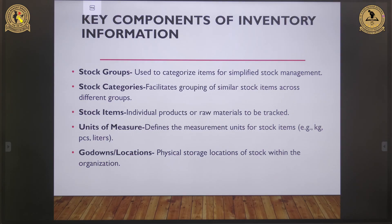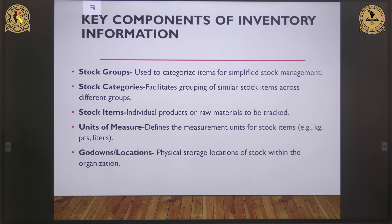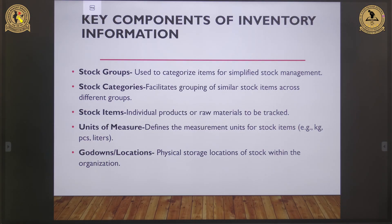Then we have the stock category, which facilitates the grouping of various stock. Then we have the stock item, which refers to the actual product or raw material that needs to be tracked individually. The unit of measure is also very important — we have to define the units in which stock is measured, such as pieces, liters, kilograms, and so on. Then we have godown and location, which help in tracking whether your product is in warehouses or different branches of your business, essentially tracking the physical storage of stock.